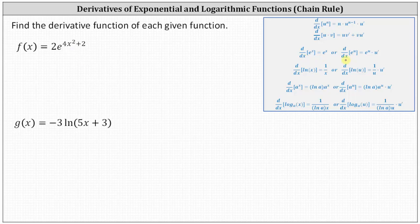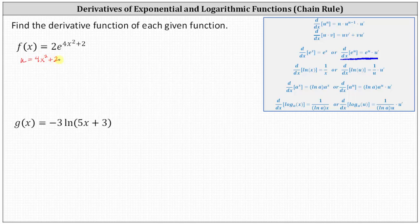Therefore we use the formula that includes the chain rule, where the derivative of e to the u with respect to x equals e to the u times u prime. Referencing the formula and the given function, notice u is equal to the exponent of four x squared plus two. Let's also determine u prime, which is the derivative of four x squared plus two, which is eight x.